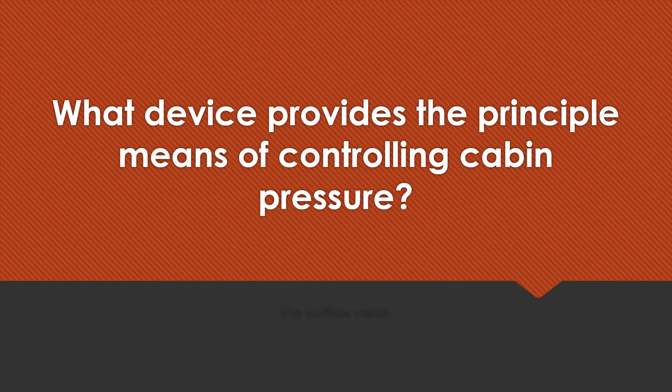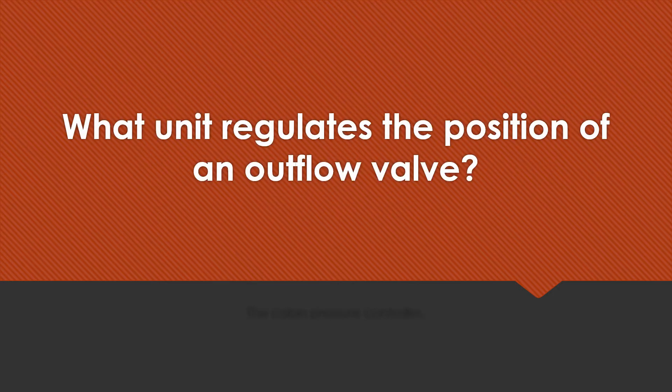What device provides the principal means of controlling cabin pressure? The outflow valve. What unit regulates the position of the outflow valve? The cabin pressure controller.